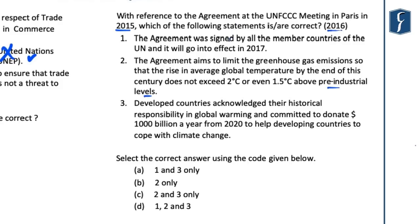This is a classic UPSC question where you might not know all statements, but can solve it if you are even a little updated on current affairs. Statement 3 says developed countries acknowledge their historical responsibility in global warming — which is incorrect. Even now, the plaguing issue in almost all climate deals is that developed countries are not ready to accept historical contributions towards CO₂ emissions. The developed countries, including the European Union, have not agreed to even 100 billion dollars over many years, let alone a trillion dollars every year from 2020. So statement 3 is clearly incorrect.